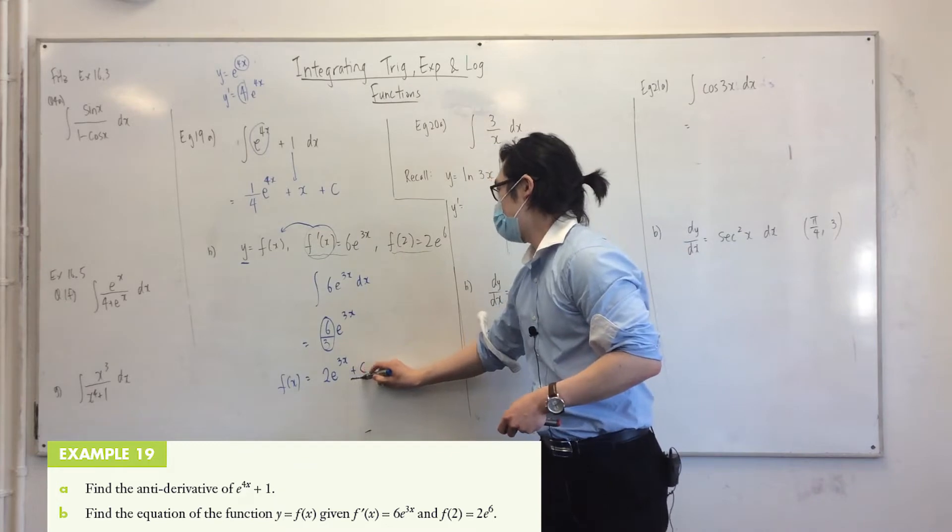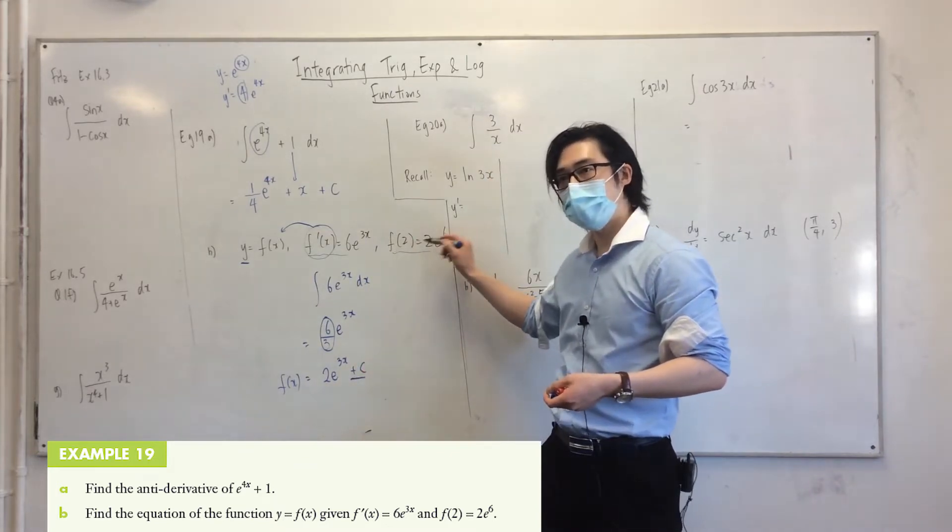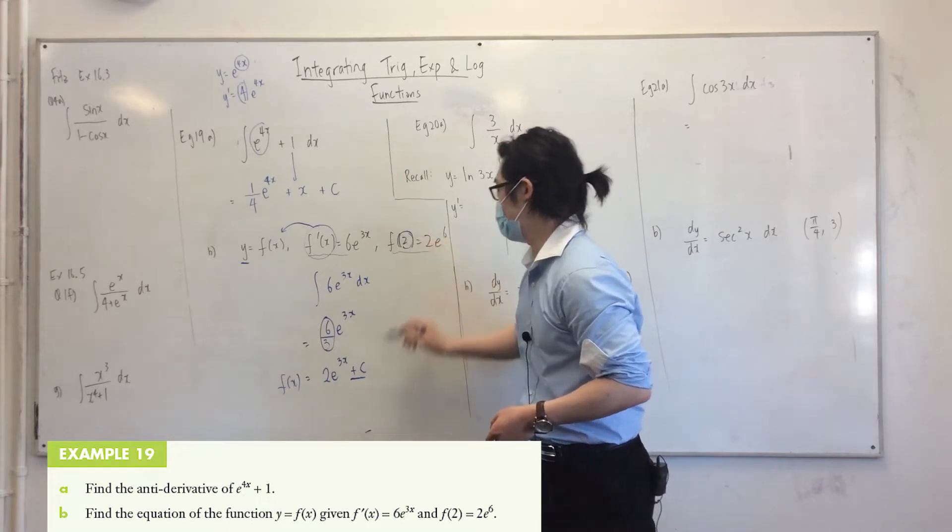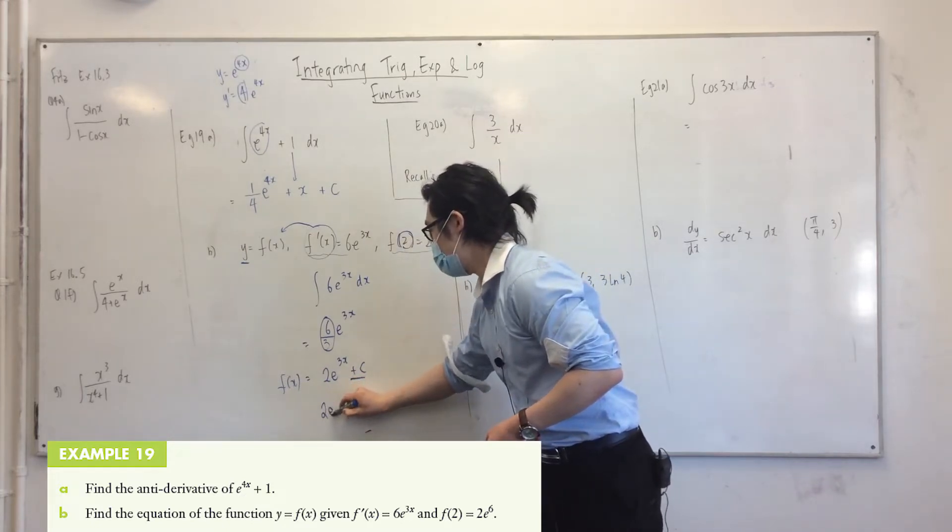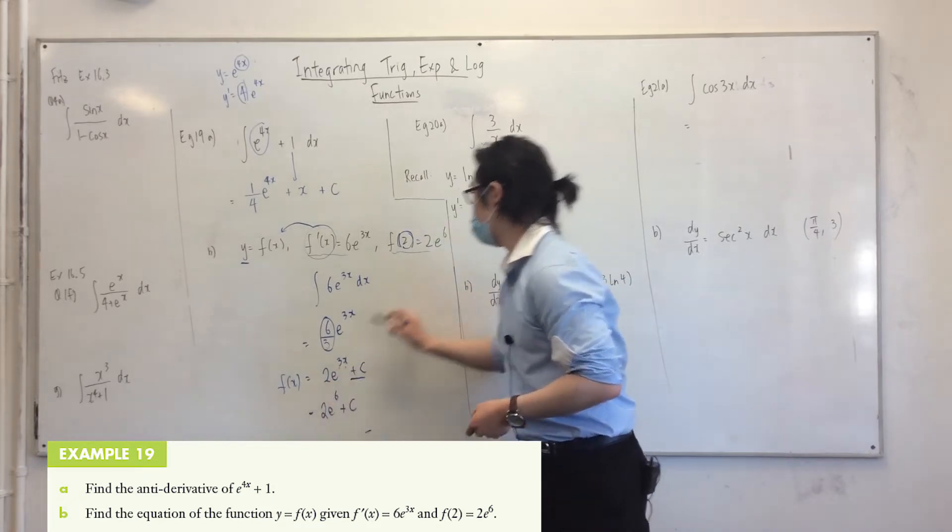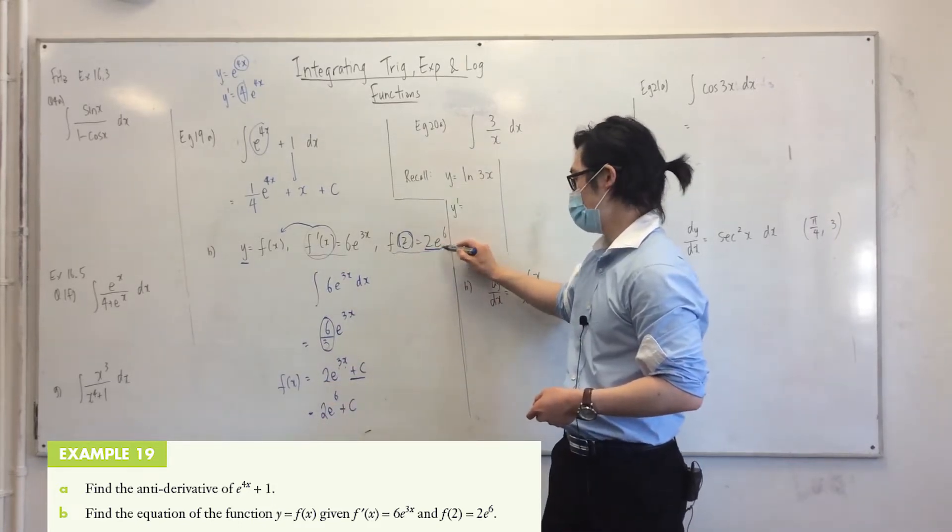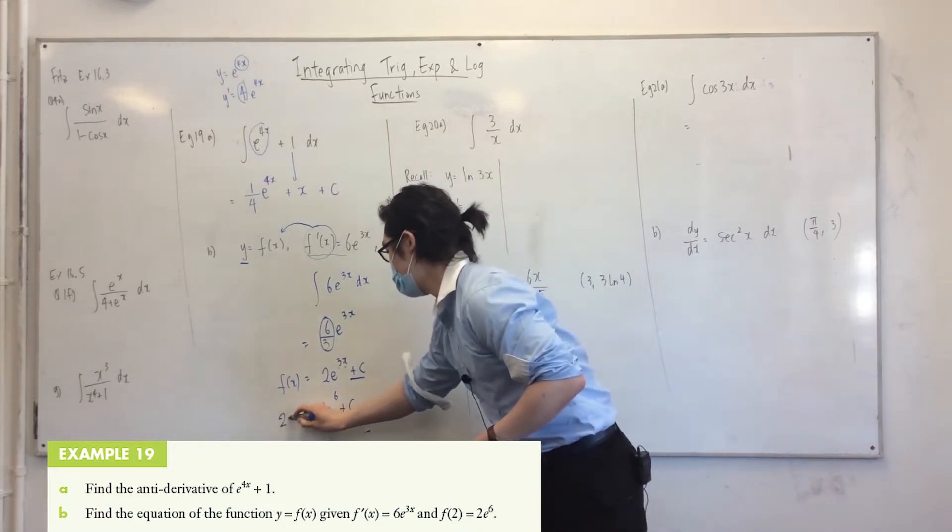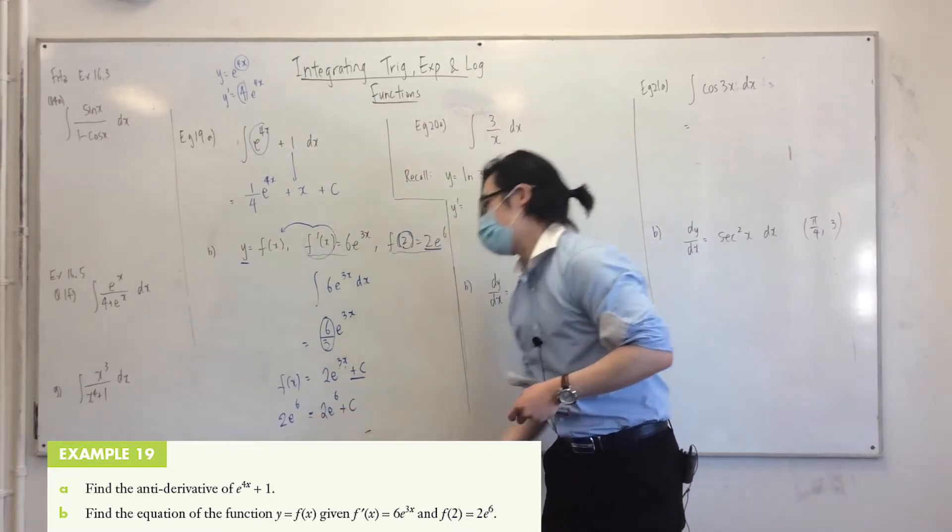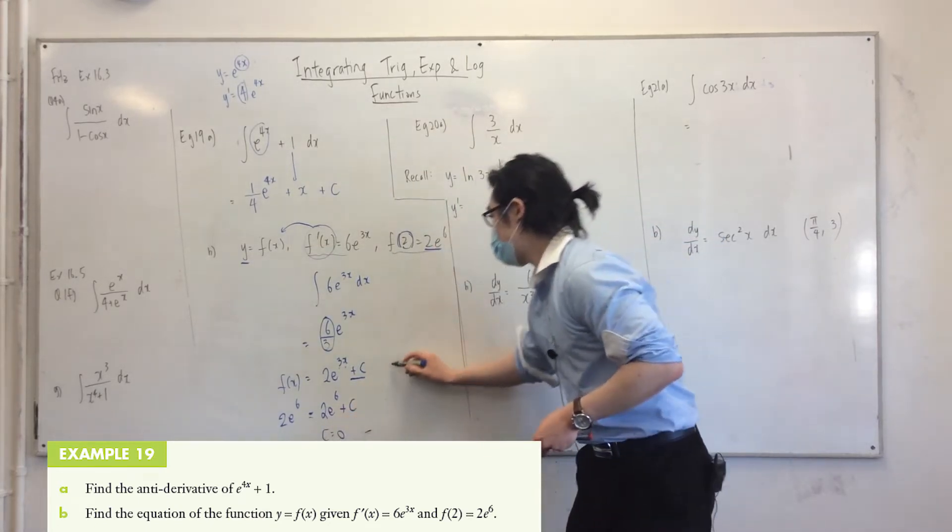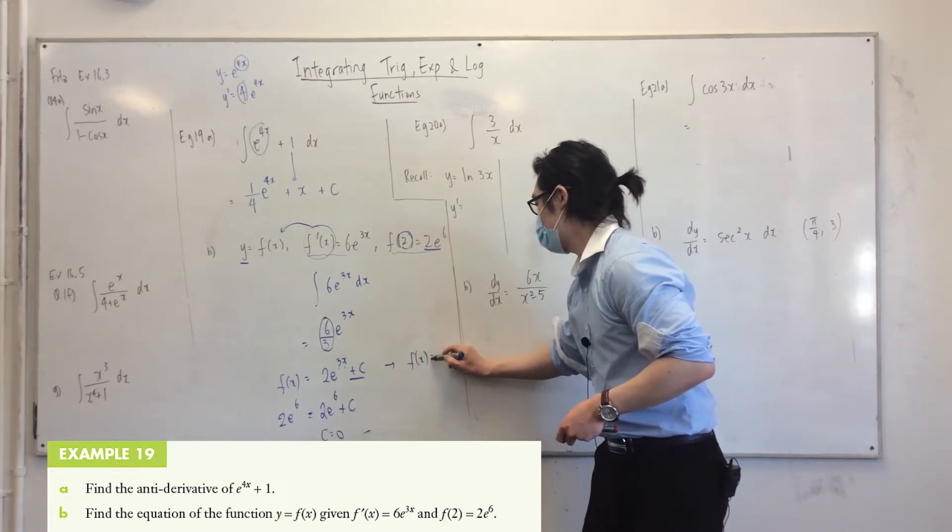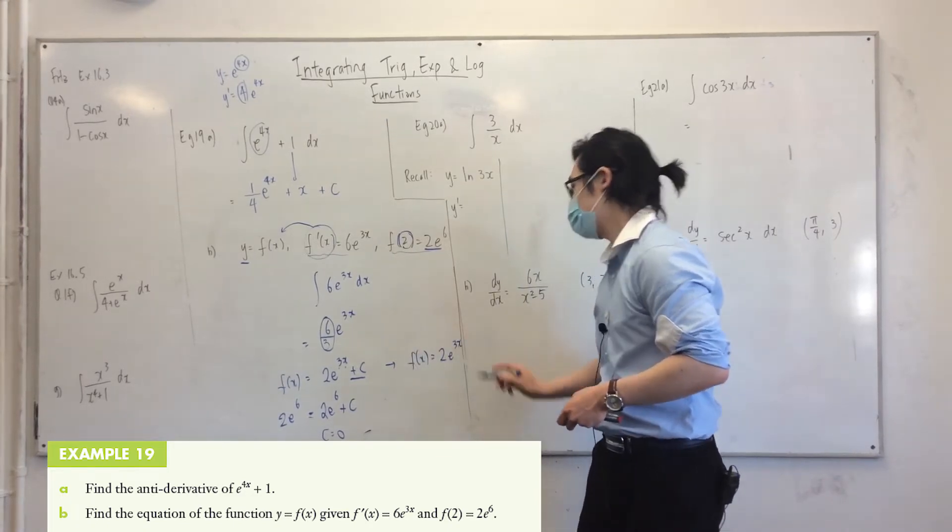We have to find what plus c is, and we are given this fact. So let's use that. When we substitute 2, so in this case, 2e^(3×2) which is 2e^6, plus c is equal to... oh it's okay, alright, same thing. So what do we know about c here then? Yes, c is 0. So basically, the answer to that question is just f(x) equals 2e^(3x). Alright?